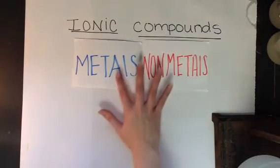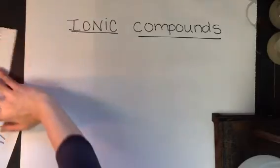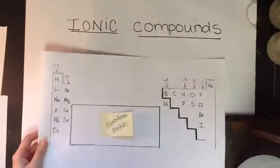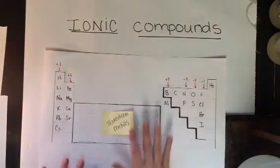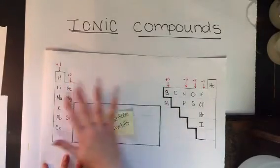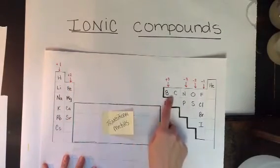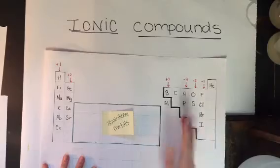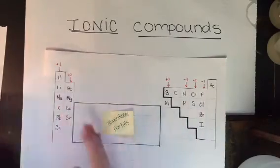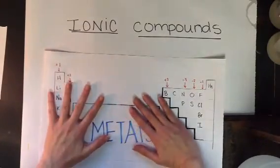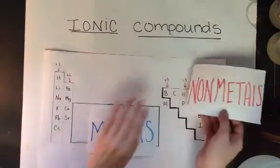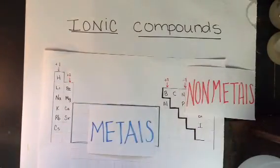So if we take a look at our periodic table and refresh our memory, our metals are seen over here on the left-hand side of the periodic table. Our staircase separates our metals from our non-metals. Our non-metals are above the staircase.